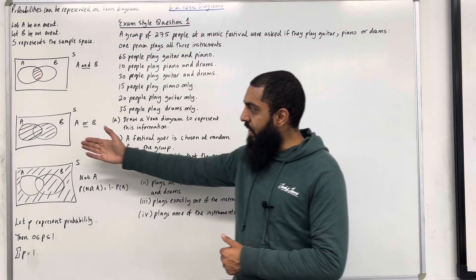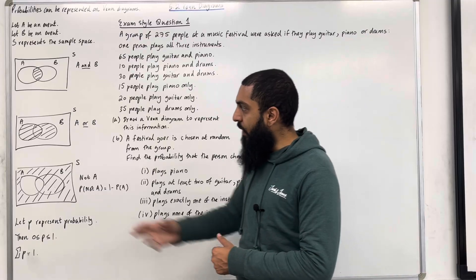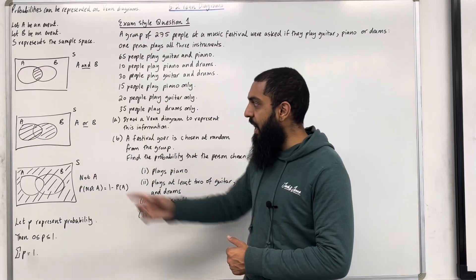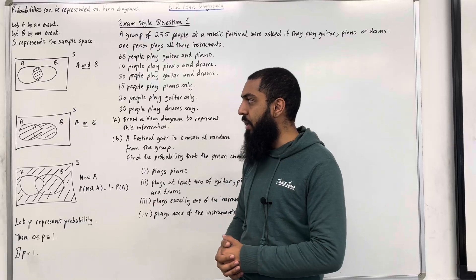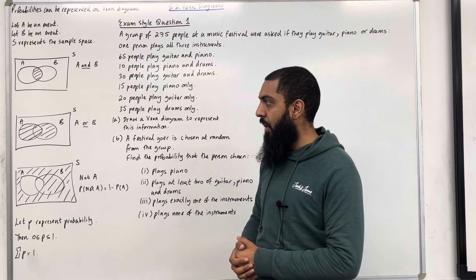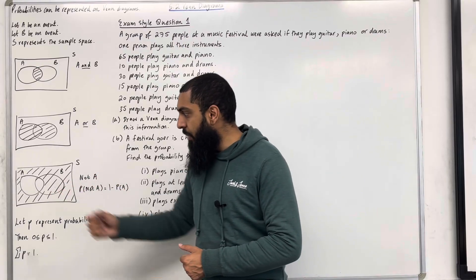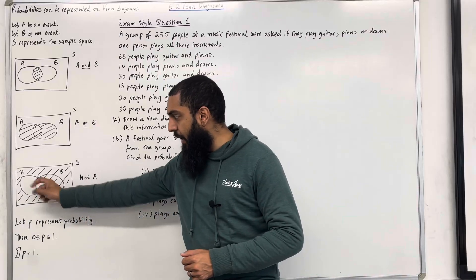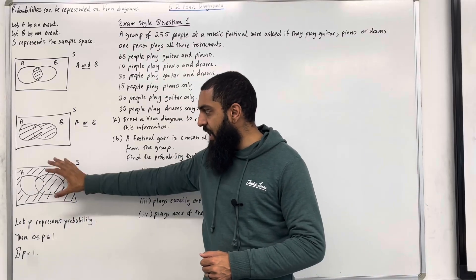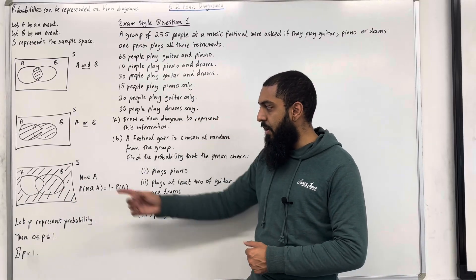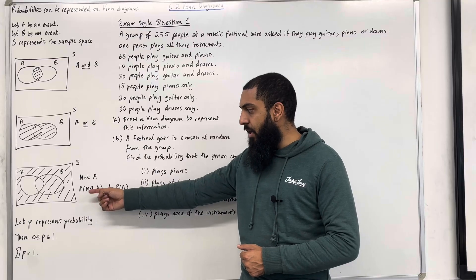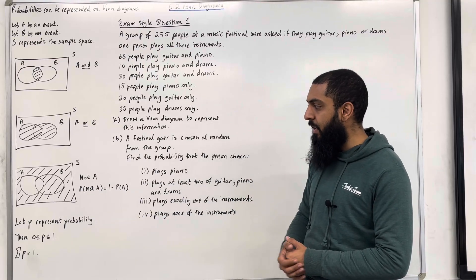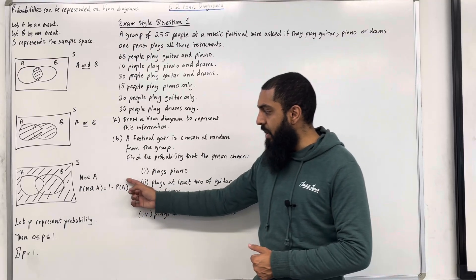Moving on to the next Venn Diagram — this shading represents the event A or B, or A union B. Finally, the third Venn Diagram: we've got everything shaded apart from the event A. This shading represents the event NOT A. The probability of NOT A happening is equal to 1 minus the probability of A happening.